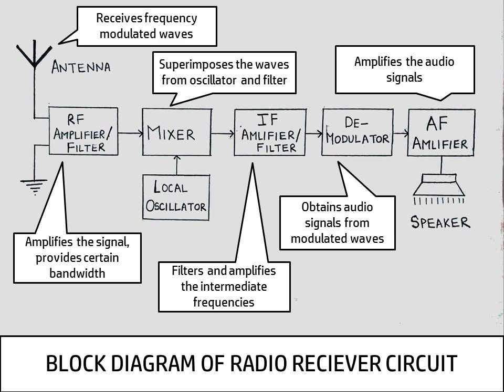Next is the AF amplifier. What it does is, it amplifies the audio signals after everything is done to better the quality of the audio signals. May it be modulation or the amplification. And then these signals are passed to the speaker which we hear.